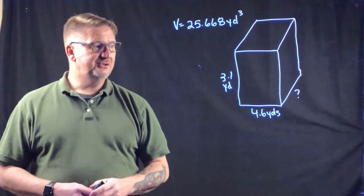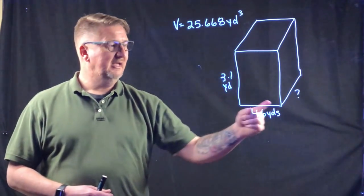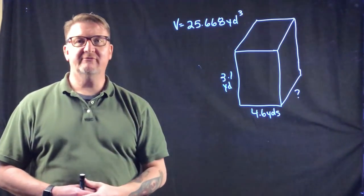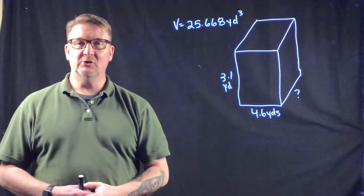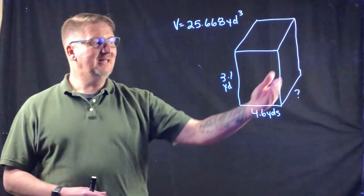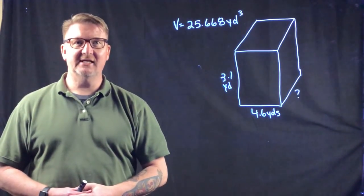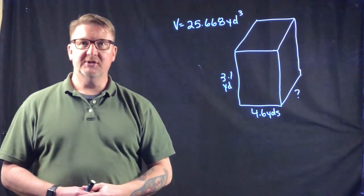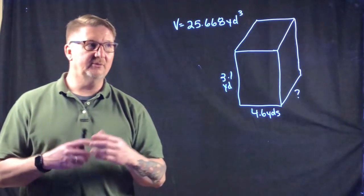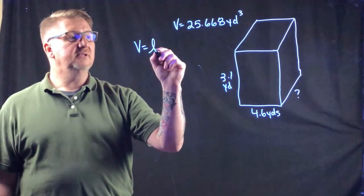In the second example I have a rectangular prism where I know the height and width but not the length. I do know the volume is 25.668 yards cubed. The question asks: what is the length when the volume is 25.668, the width is 4.6 yards, and the height is 3.1 yards?